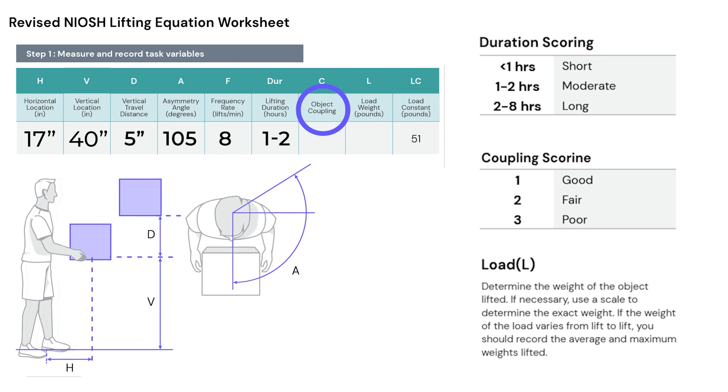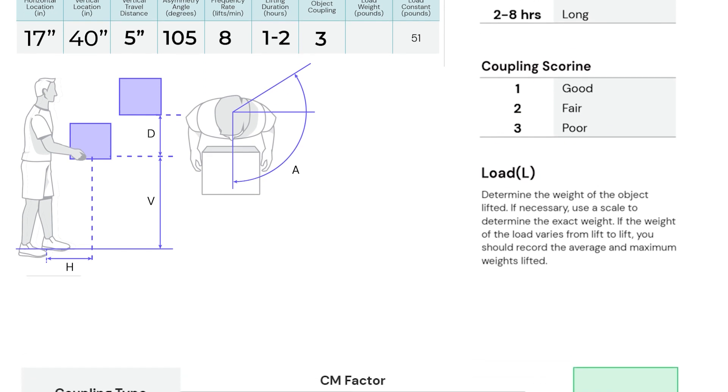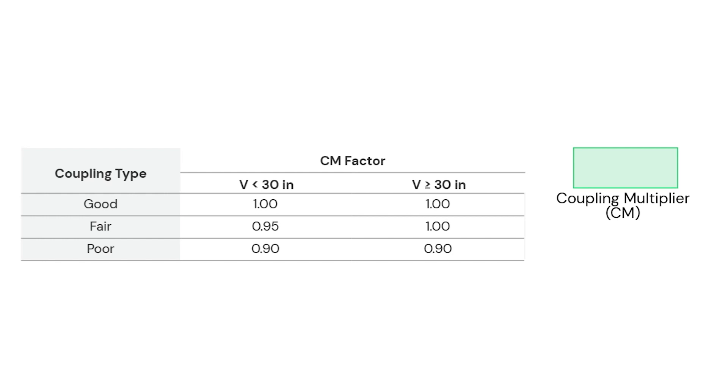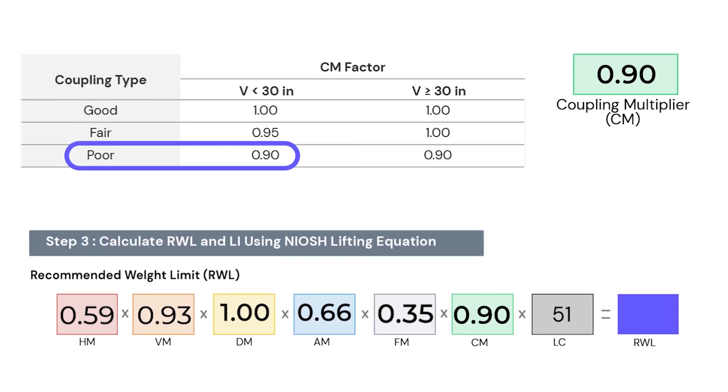We finish up with our last variable, hand-to-object coupling. Through field observation, we assess coupling as good, fair, or poor, based on overall effectiveness throughout each lifting task. We collected a field observation for the coupling quality in our example, and found it to be poor, or a three, because there were no handles. It was isometric lifting with friction. One final time, we plug that coupling quality field observation of three into our coupling quality conversion table. We pluck the coupling quality multiplier from that conversion table, and we plug that coupling quality multiplier, in this case 0.90, into our equation.